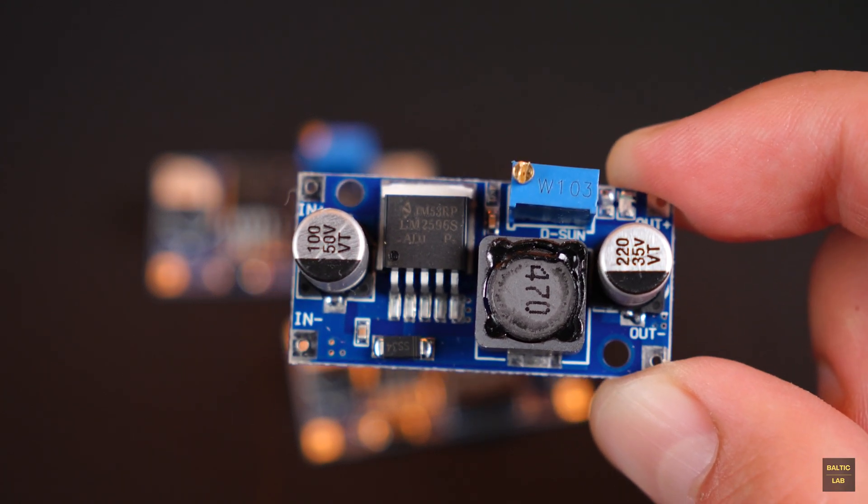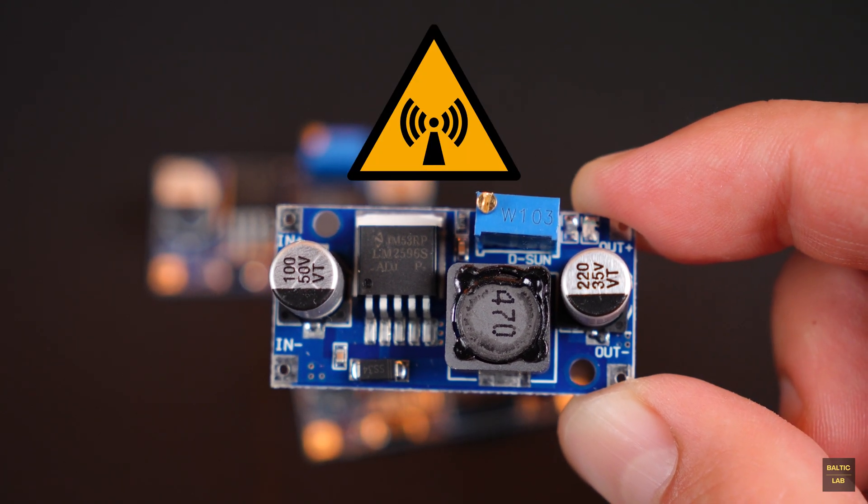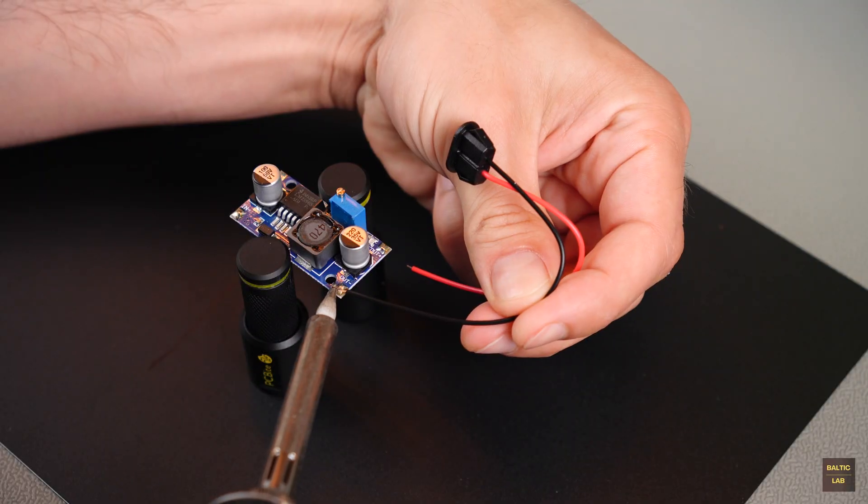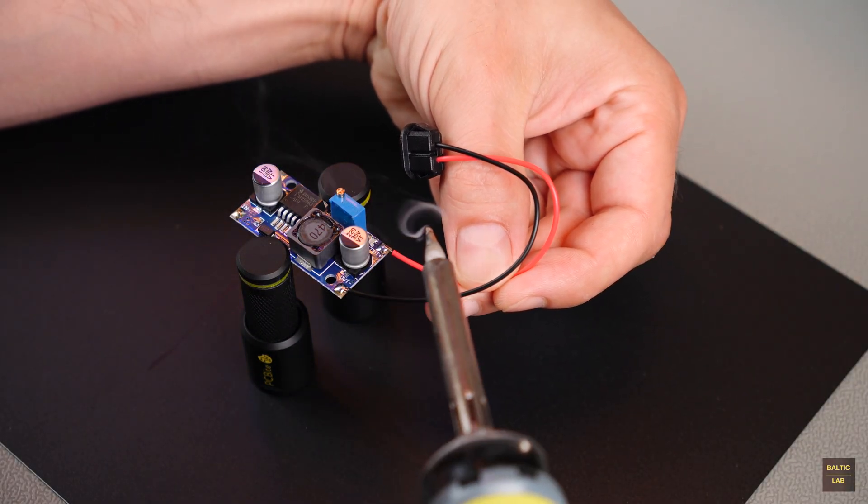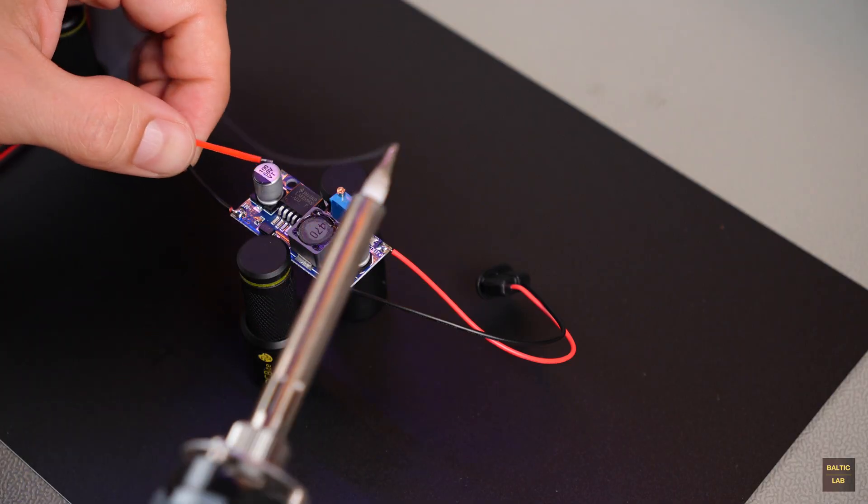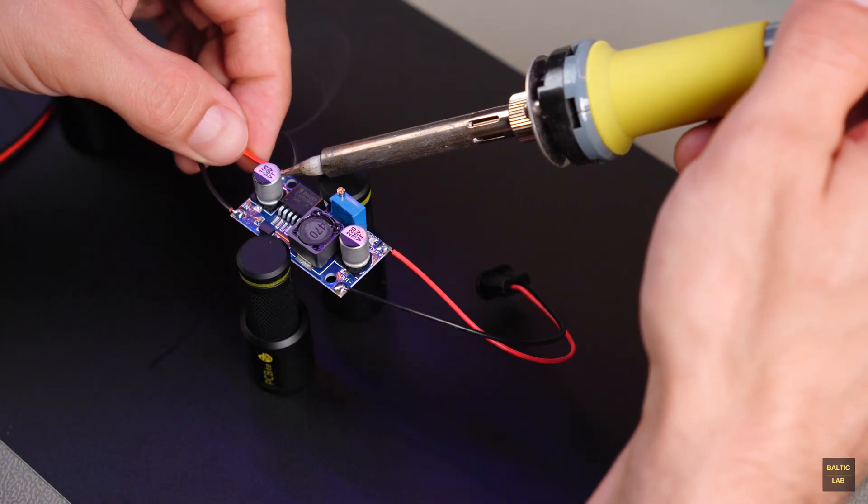This widely used budget buck converter is an EMC nightmare. In vehicle applications like camper van conversions, its use is at best not standard compliant and at worst it can cause dangerous operating conditions in other vehicle components.